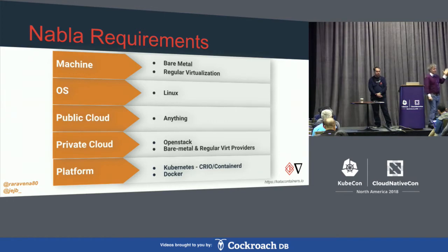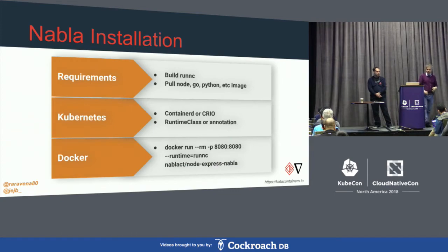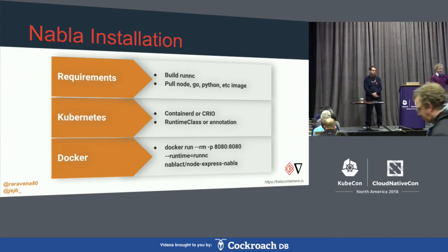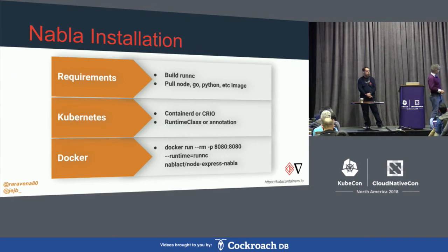Nabla can run on any public cloud, almost all private clouds, and almost all platforms, provided Kubernetes has been configured with the runtime class. The current requirement is RunNC — every different runtime currently has a different RunC: RunNC for Nabla, RunSC for GVisor's 'run secure containers,' and so on. Once the runtime class is in place, we can run them all in a standard way, also with Docker using the particular runtime specifier.